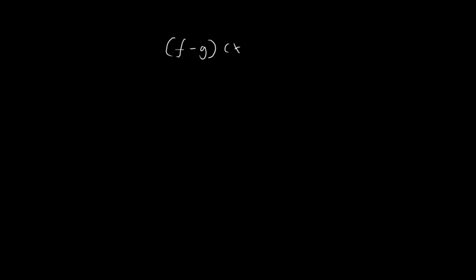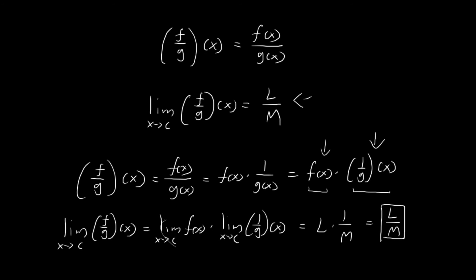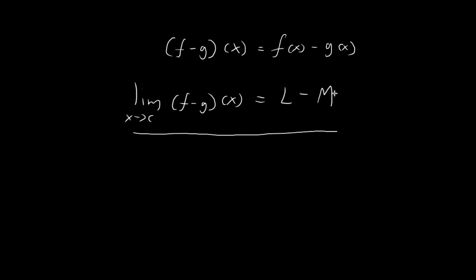Now I'm going to prove one last rule, called the difference law. I'll define the function f minus g as a function that takes x and outputs f of x minus g of x. What I want to prove is that the limit as x tends towards c for f minus g is equal to l minus m. We can prove this by noticing that f minus g is actually just a sum of two functions: it's f of x plus negative 1 times g of x. So it's the sum of f of x and the function whose outputs are negative 1 times g of x.